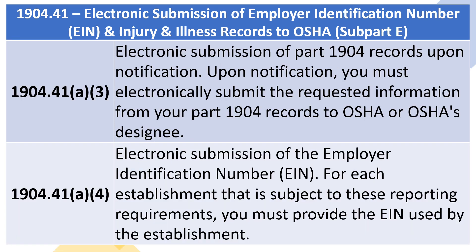1904.41(a)(3): Electronic Submission of Part 1904 Records Upon Notification. Upon notification, you must electronically submit the requested information from your Part 1904 records to OSHA or OSHA's designee. 1904.41(a)(4): Electronic Submission of the Employer Identification Number (EIN). For each establishment that is subject to these reporting requirements, you must provide the EIN used by the establishment.